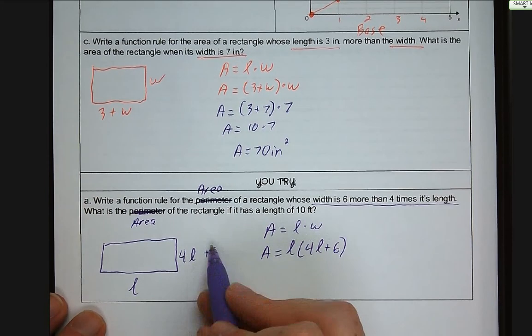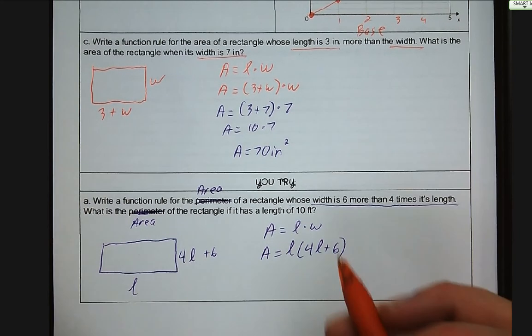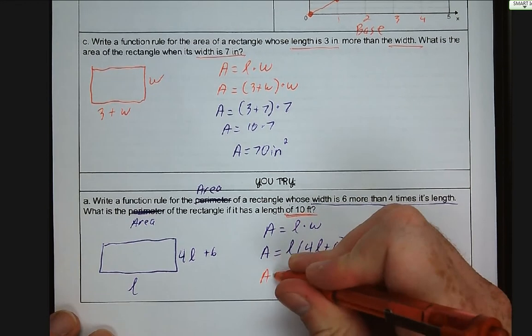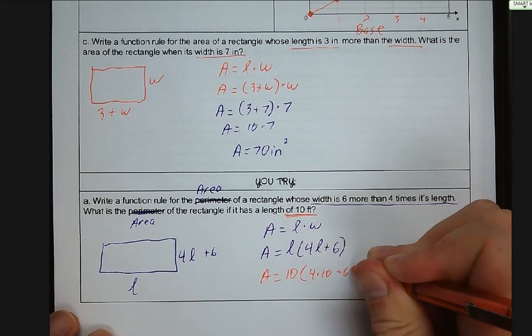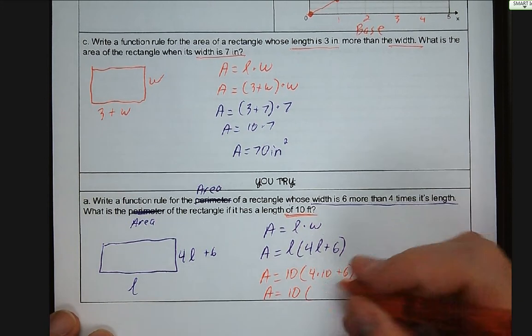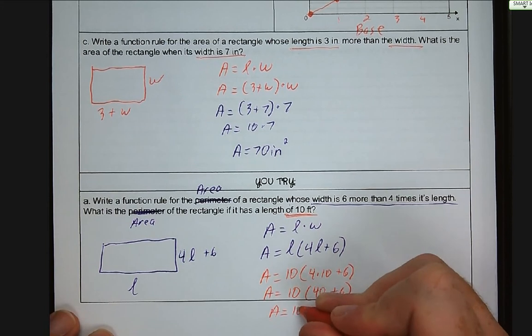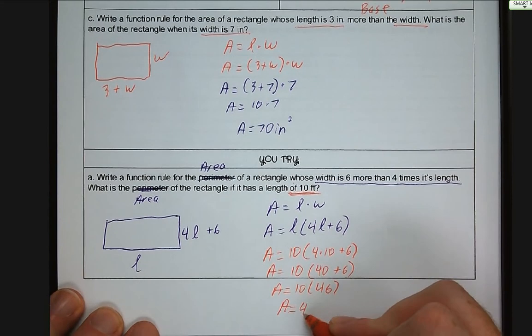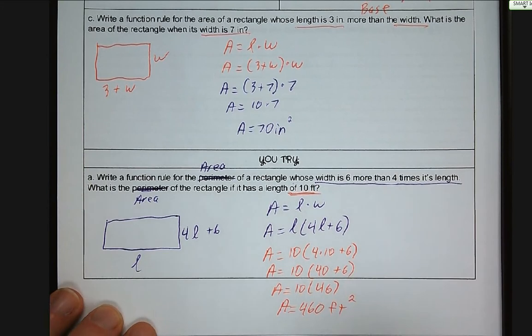And we wanted to know what the area was with a length of 10 feet. So we go ahead and plug 10 into that equation. So you have 10 times 4 times 10 plus six. So 4 times 10 is 40 plus six. 10 times 46, which is going to be 460 feet squared.